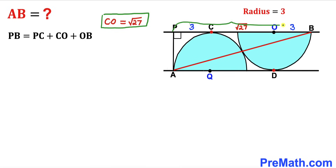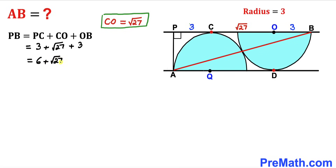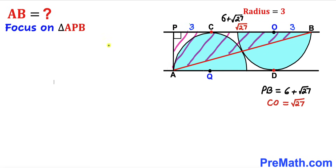This whole side length PB is going to be equal to the sum of the individual lengths PC, CO, and OB. So we add all three: PC is 3, plus CO which is √27, plus OB which is 3 as well. Adding everything together gives us 6 + √27. So our PB length turns out to be 6 + √27.